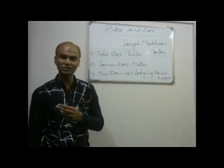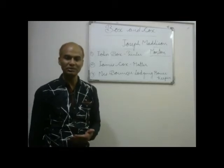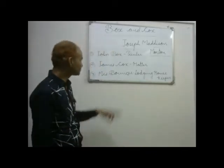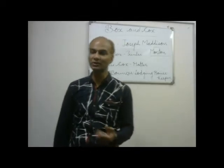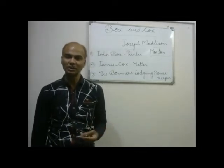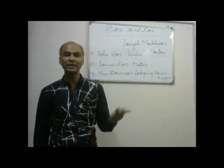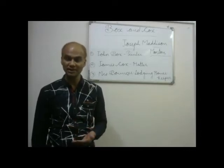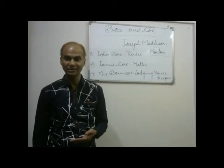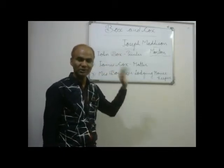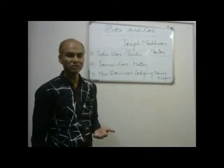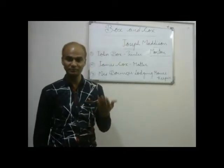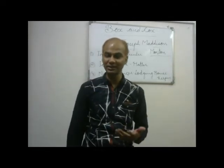Apart from these three, there are two more characters introduced later, present only in the original version. Now, Mrs. Bouncer has rented a single room to two people, neither of whom knew the other was also using the same room. Box didn't know about Cox and Cox didn't know about Box. She managed this out of greed — getting double rent from a single room.